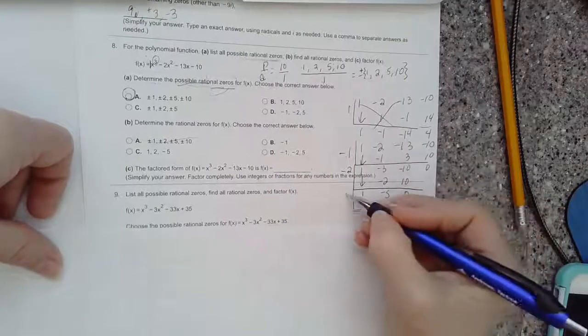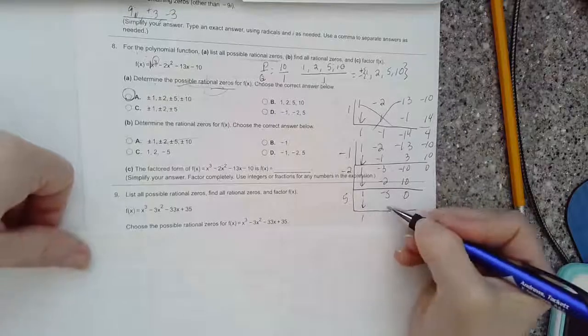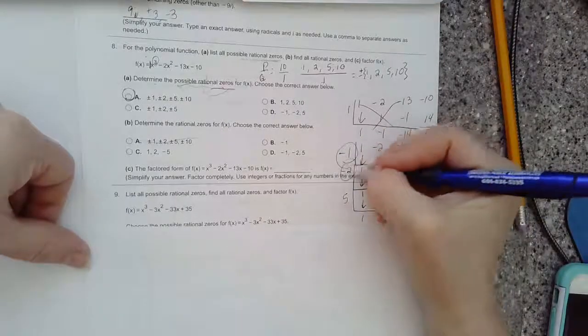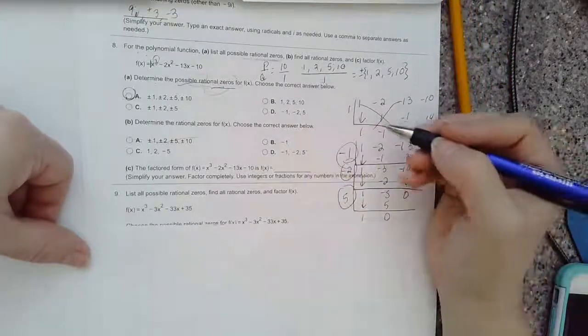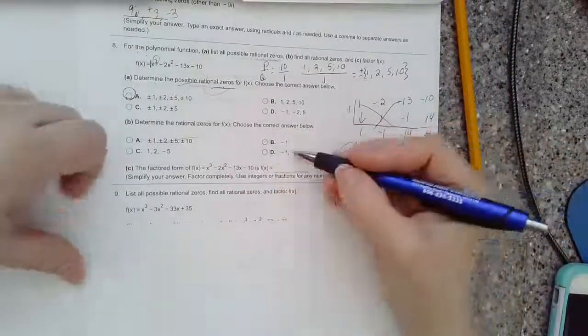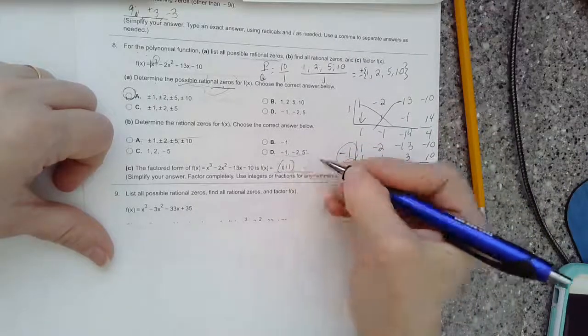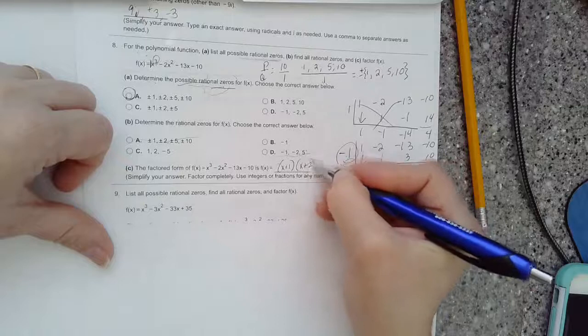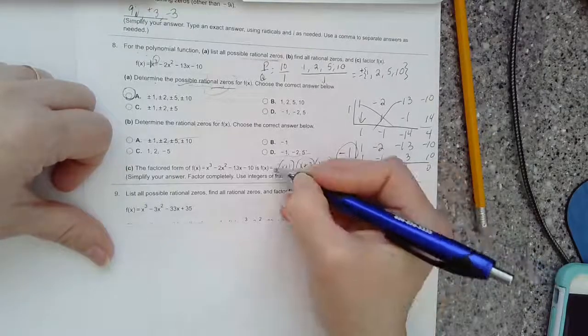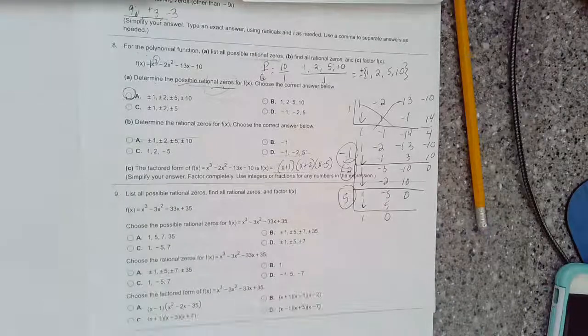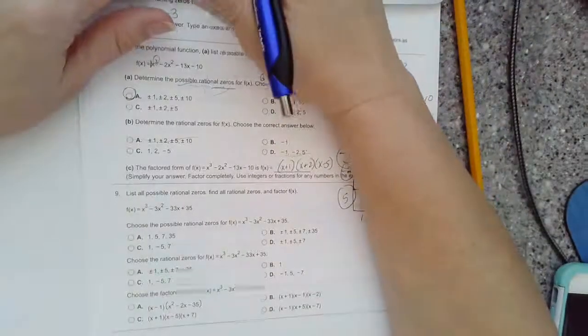Then lastly, it says now write it in factored form. If you know these to be the zeros, you just change the sign and put an x on it to see it in factored form. And that's your final answer. Hope that helps. We'll pick back up on number nine in the next video.